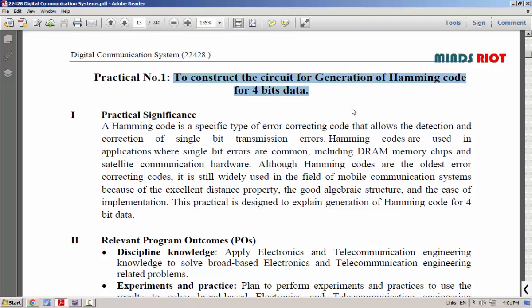Before we start the practical, let's understand what is hamming code. Hamming code is one of the error correcting codes that detect and correct single bit transmission error.